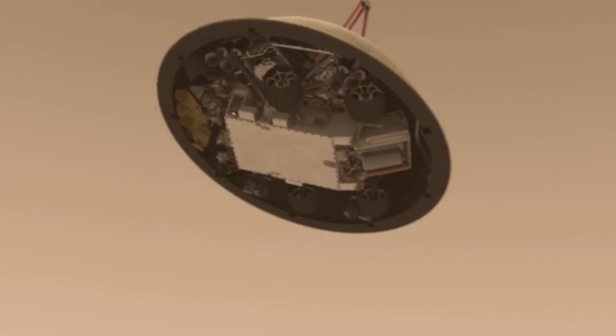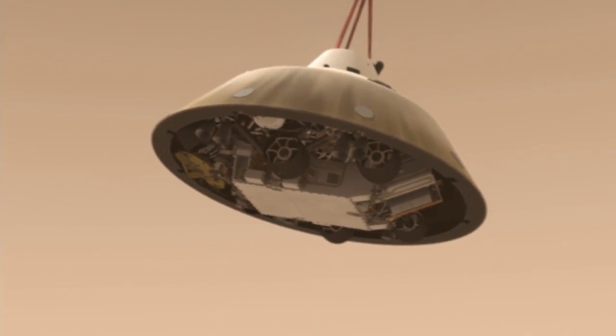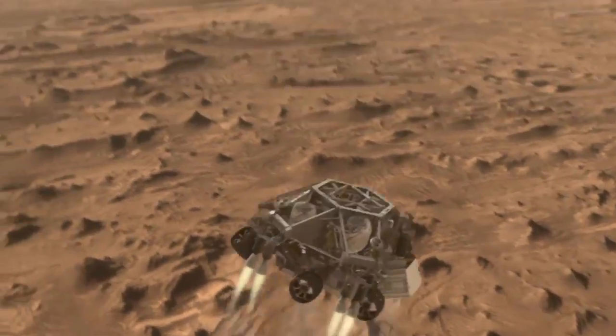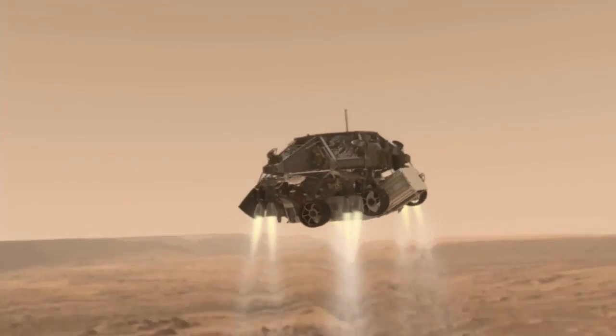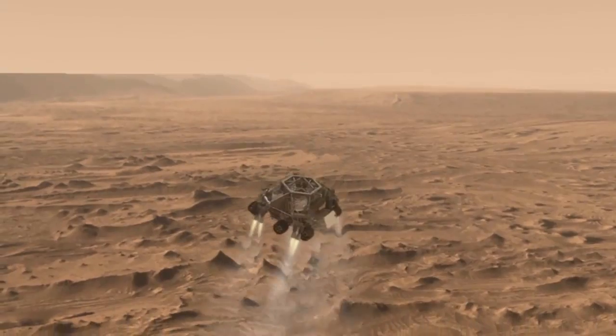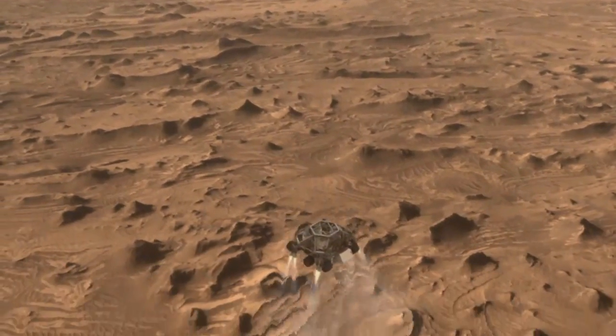Once it reaches an altitude of about one mile, the spacecraft drops out of the back shell at about 200 miles per hour. It then fires up the landing engine to slow it down even further.